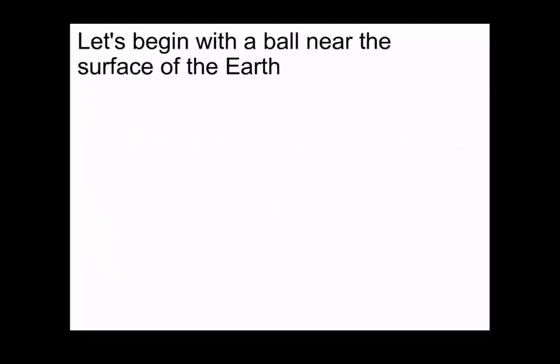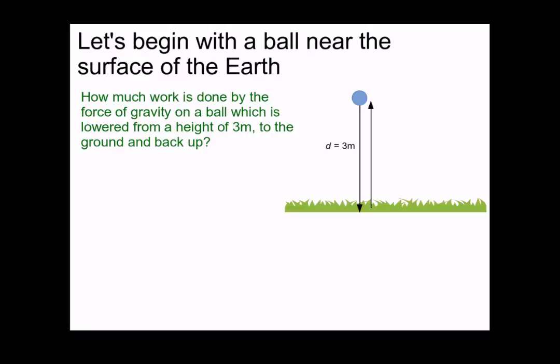Let's begin by considering a ball near the surface of the Earth. The ball begins 3 meters above the ground, falls, and bounces back up to its original height. How much work is done by gravity in this case?